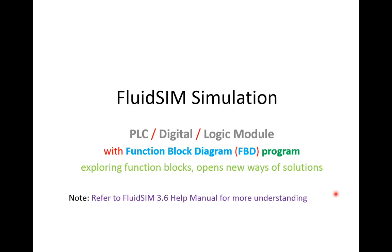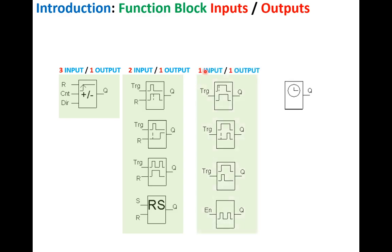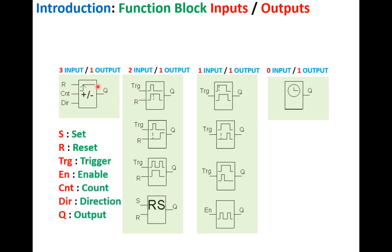First, we're going to look at the function block inputs and outputs. It is really important to identify early on the type of inputs and outputs you have. Some function blocks might come with three inputs and a single output, or double input single output, single input single output, or even without any input but still having an output. No matter what, your function block must have an output.